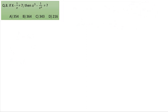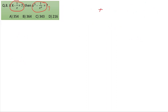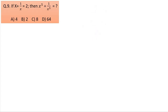Question number 8: x plus 1 by x equals 7, find x cubed minus 1 by x cubed. Working it: x cubed minus 1 by x cubed — multiply — 7 cubed is 343, minus 3 times 7 is 21. We get 343 minus 21 equals 322. Answer is 322.